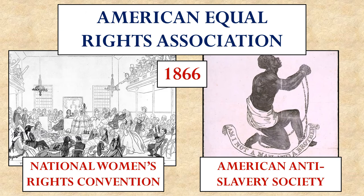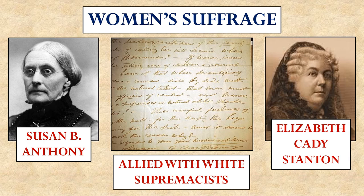While Blacks were freed from slavery, they still had a long fight ahead for true freedom and equality. The American Anti-Slavery Society had accomplished its main purpose, so it merged with the National Women's Rights Convention to form the American Equal Rights Association — no longer just about ending slavery or women's rights, but about getting equal rights for all people. In practice, however, this didn't work well.